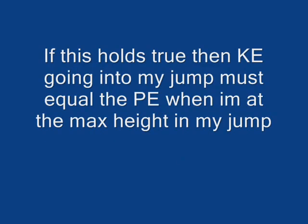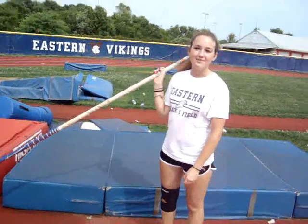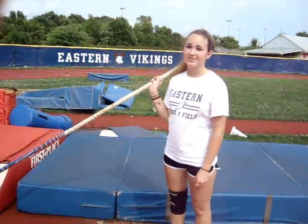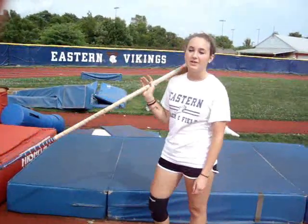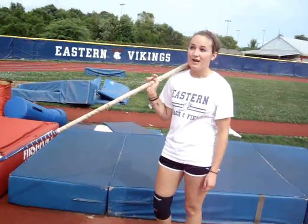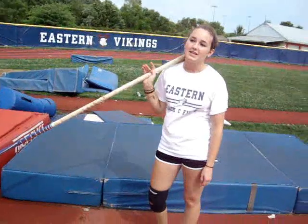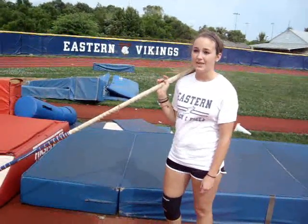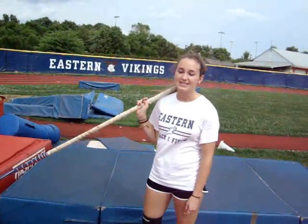The major principle of physics is conservation of energy, which we can use to incorporate into pole vaulting. We can use the equation KE equals PE to figure out my height for pole vaulting. That's equal to one-half mv² equals mgh. And because there's mass on both sides of the equation, we can cancel them out.